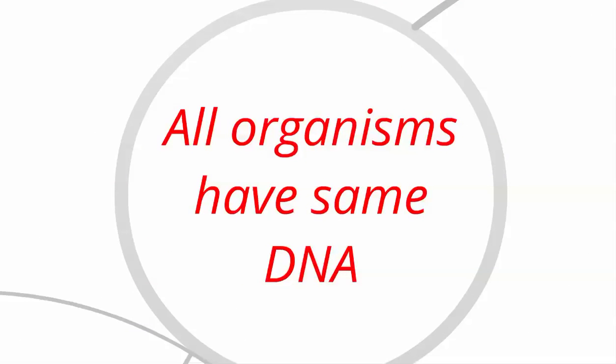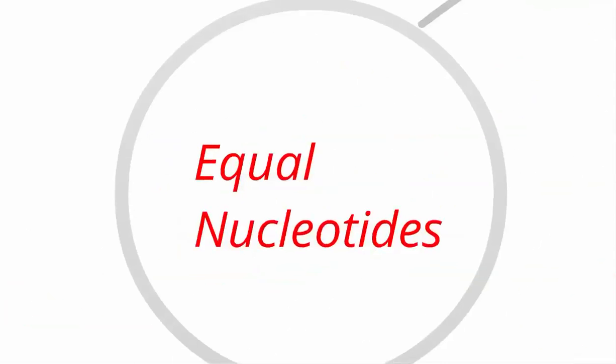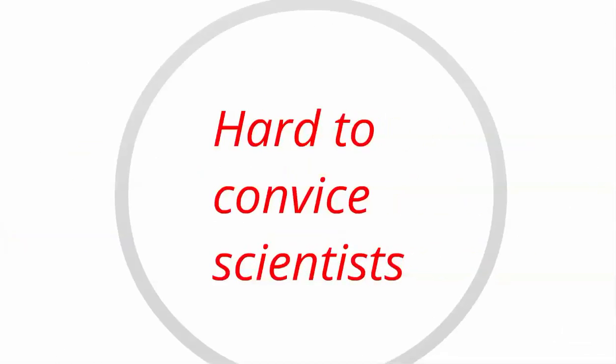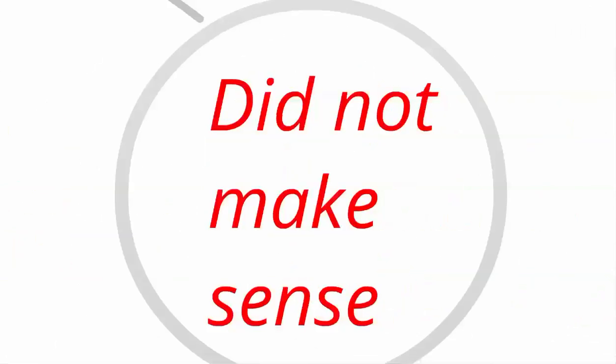A long time ago, scientists thought that all organisms had the same DNA, but scientists had a hard time trying to prove that this was true. There are three parts for this old way of thinking. First, they thought all creatures had equal nucleotides in their DNA. Secondly, it was hard to convince scientists that this was true because it did not make sense — why would all animals and plants have the same exact nucleotide makeup yet look so different?